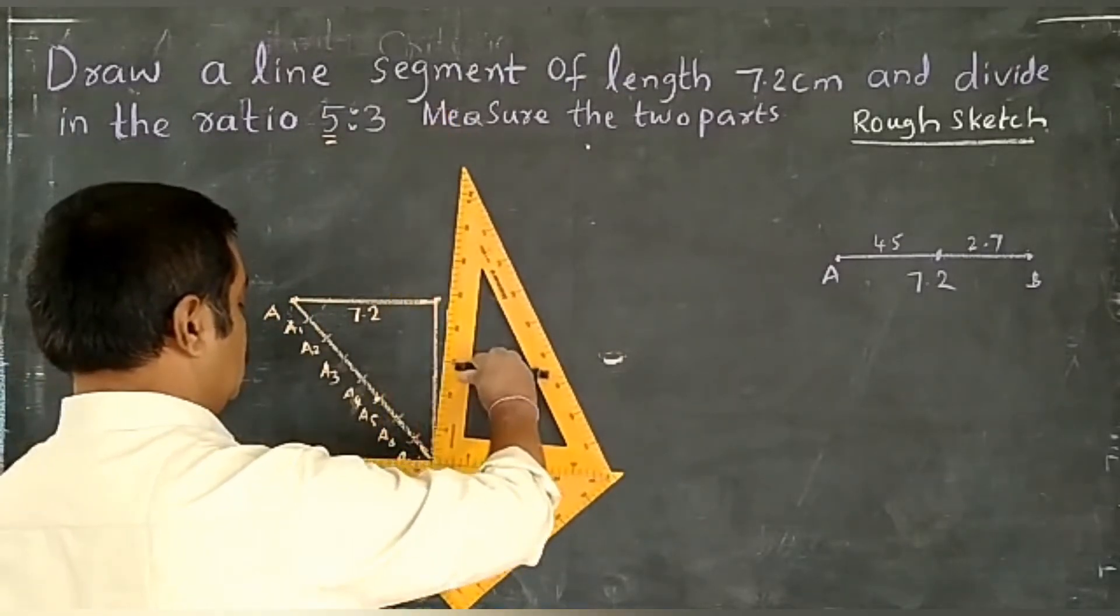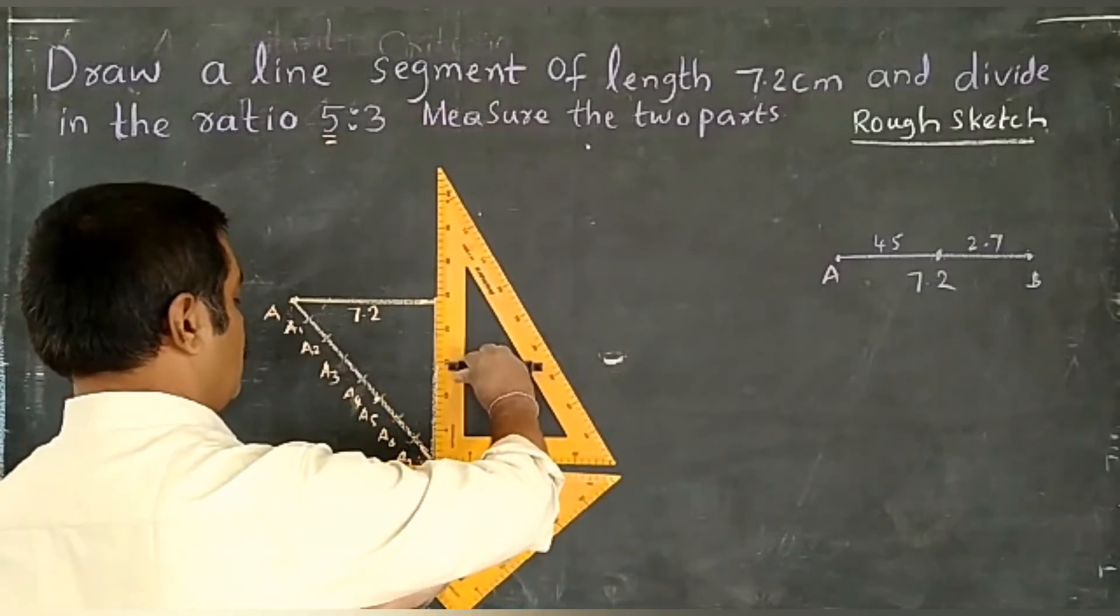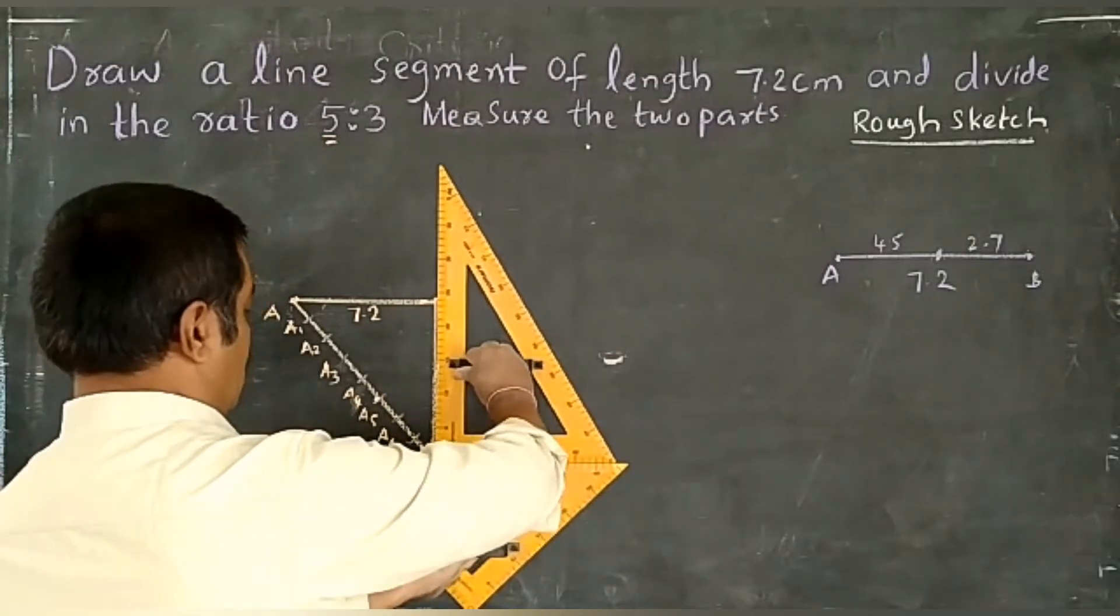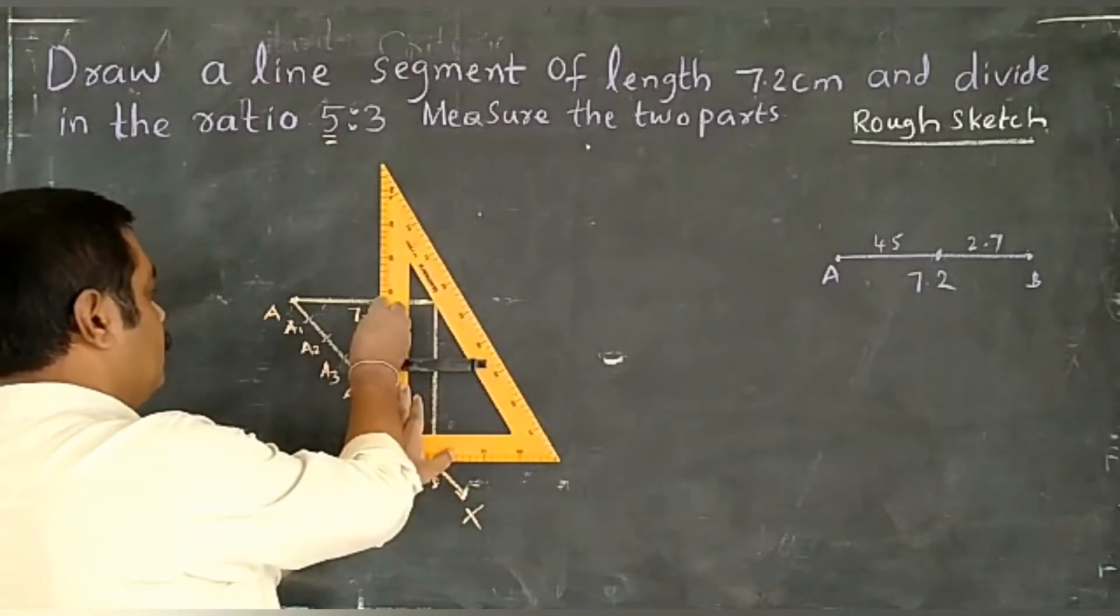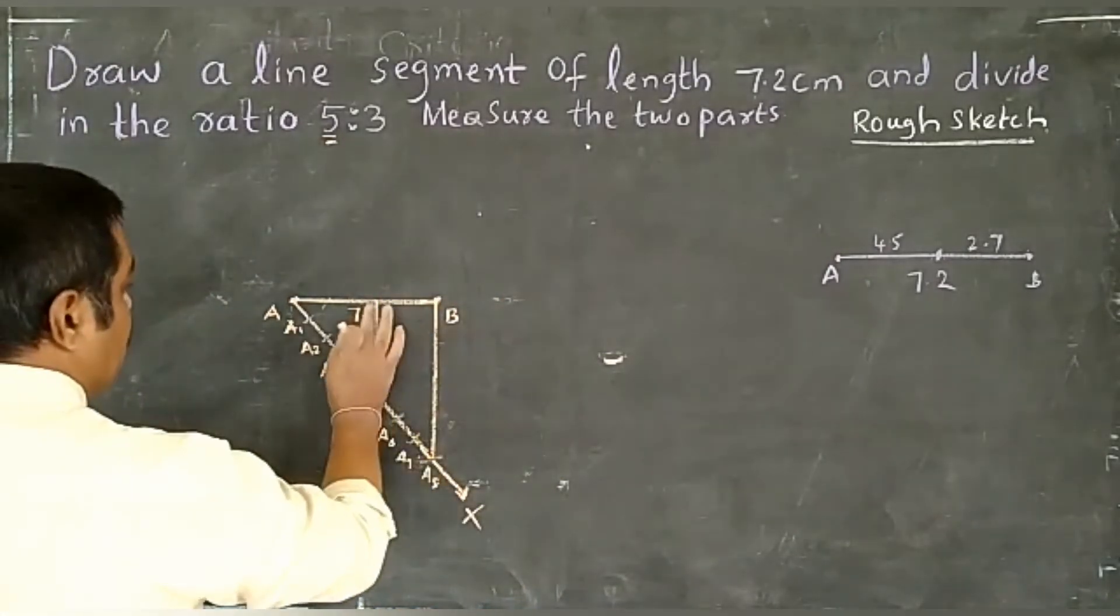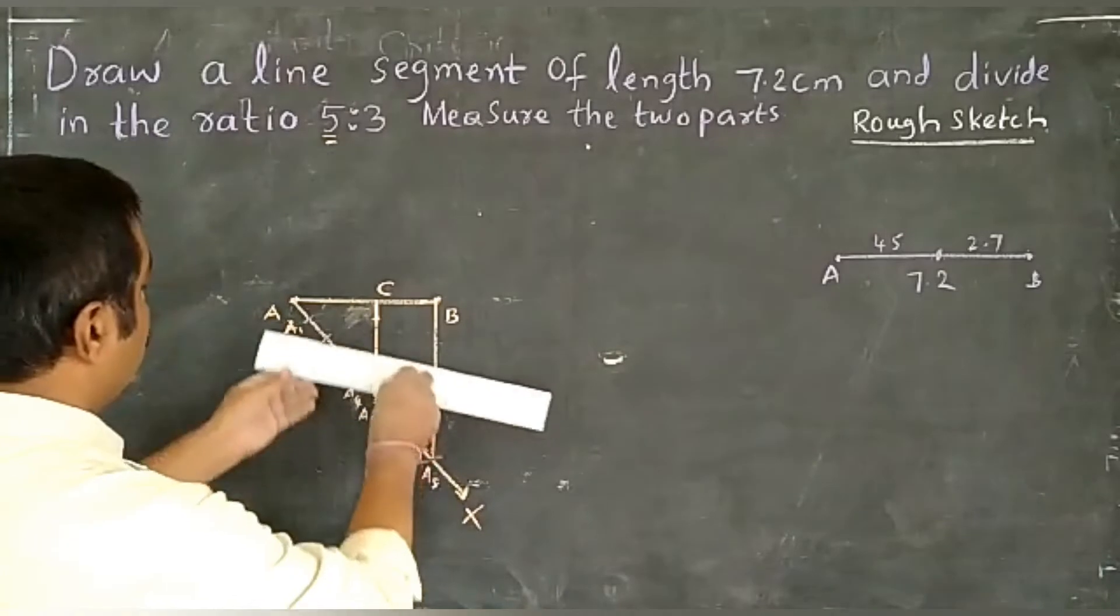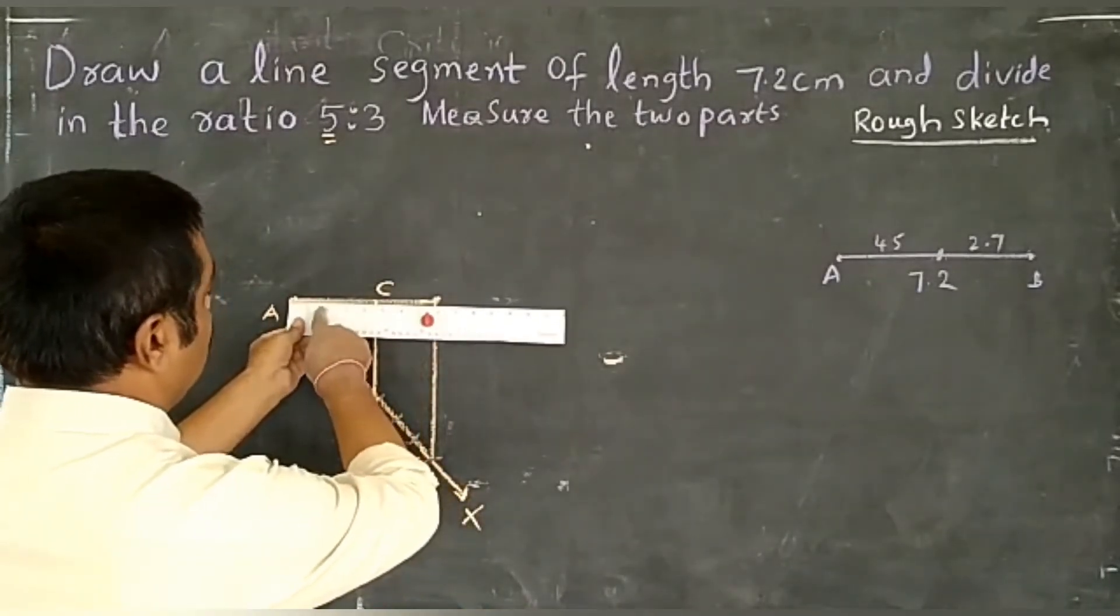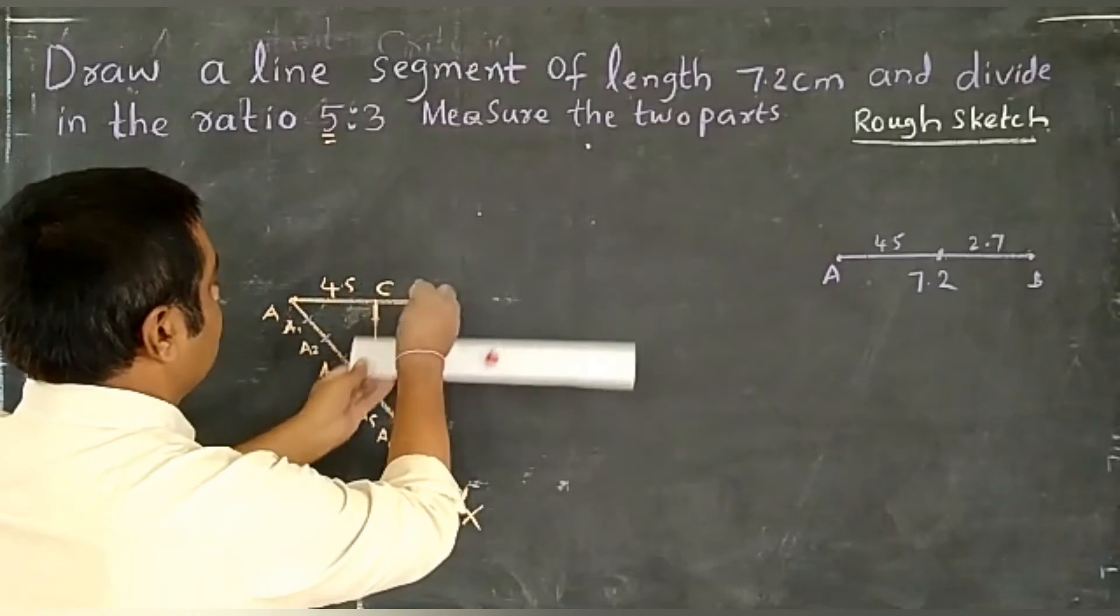Fix it properly. By the help of this, slowly move it up to A5, and draw the line. It intersects at the place C. Now measure children - from here to here exactly we get 4.5, and from here to here we get 2.7.